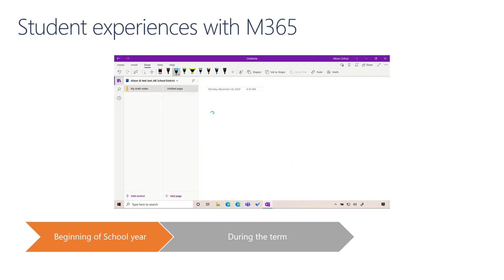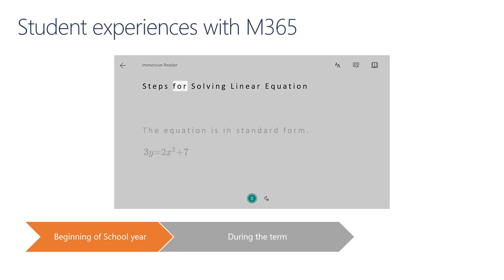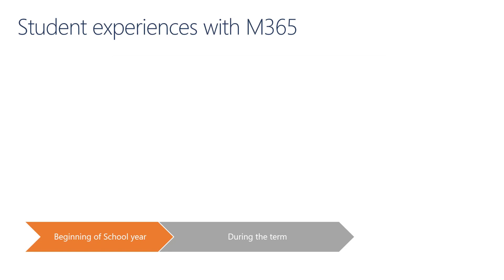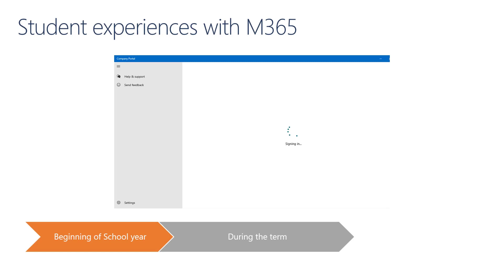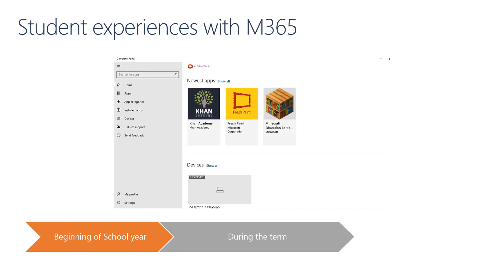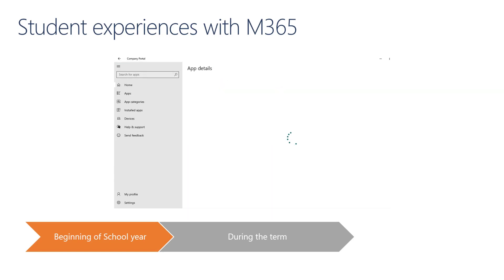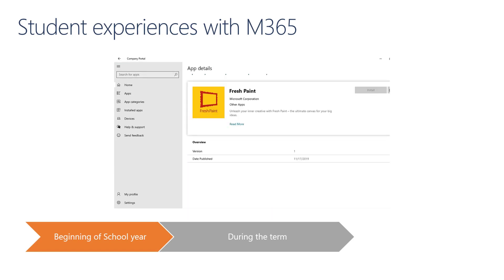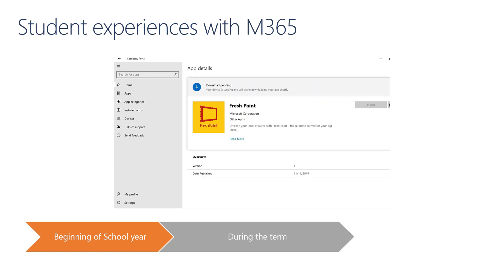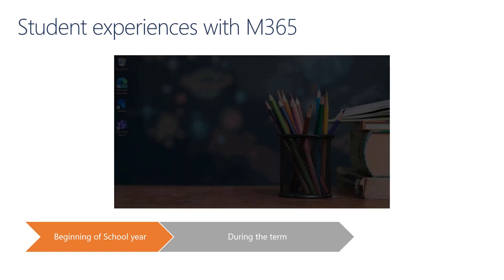There are some great applications that Alison has access to — for example OneNote, where she can use inking and Immersive Reader. If she needs additional applications, she can open Company Portal and do self-servicing, so that applications that are made available to her she can install on her own.